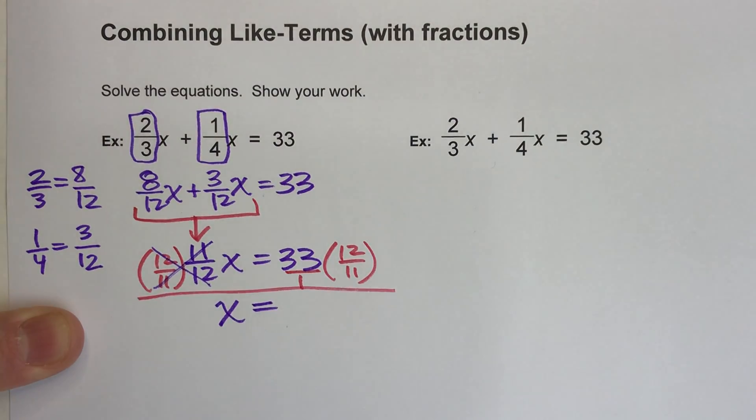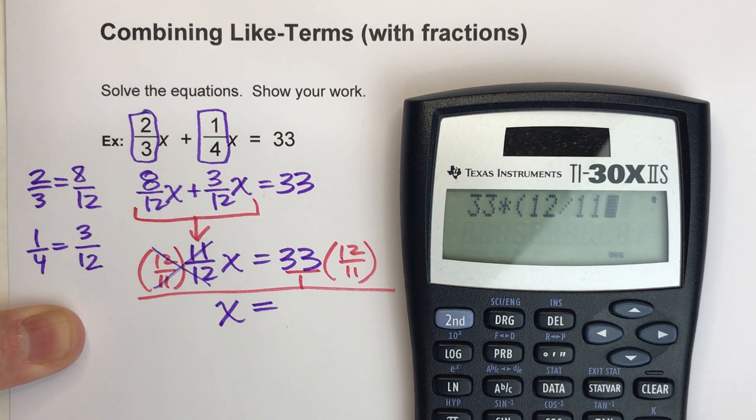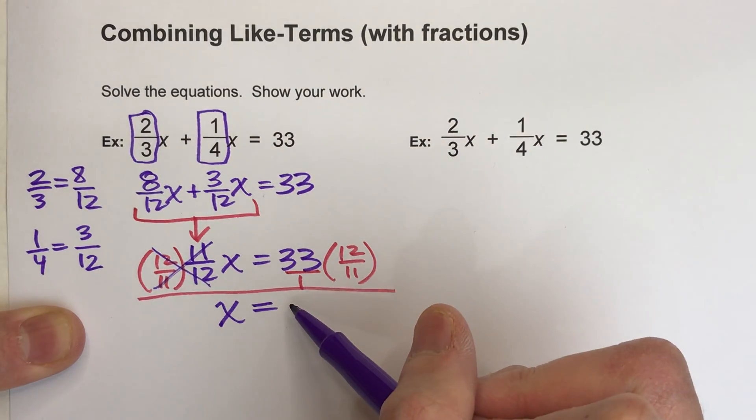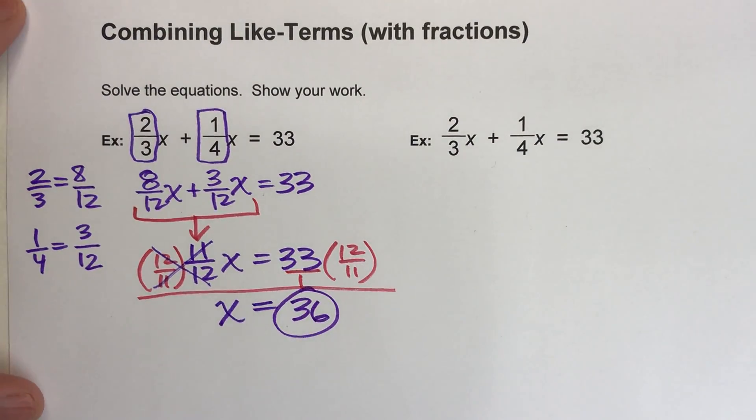Now if I want to multiply this by hand, I can do that. I can multiply it out, but we can also use a calculator. We've got 33 times 12/11. 36, I believe. There it is. So this equals 36. Boom. Got it. So that's one way to do it. Find a common denominator, and then you can combine like terms.